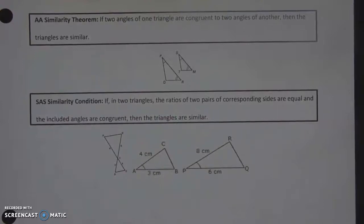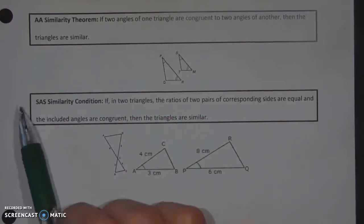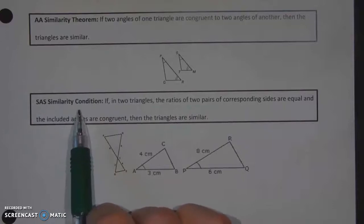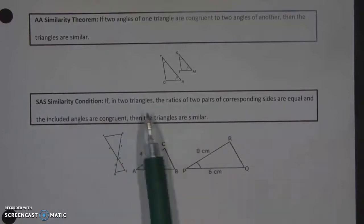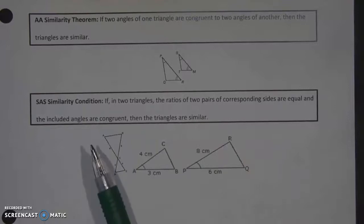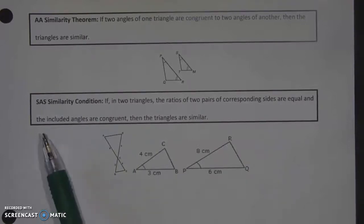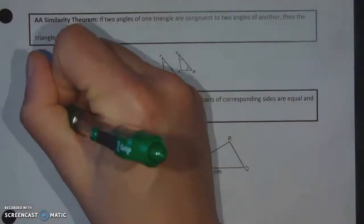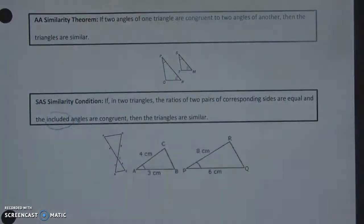And that leaves us with our final similarity condition, and that is the SAS similarity condition. If, in two triangles, the ratios of two pairs of corresponding sides are equal, and the included - this is an important word here - the included angles are congruent, then the triangles are similar.